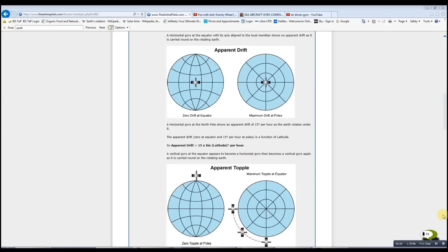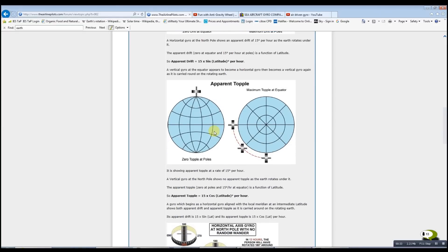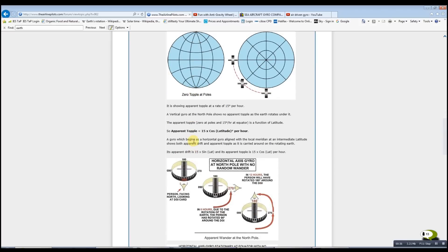Conversely, a vertical gyroscope acts exactly opposite. So the mathematical equation for that would be 15 times cos of the latitude in degrees per hour.